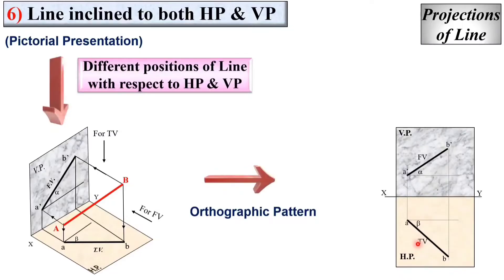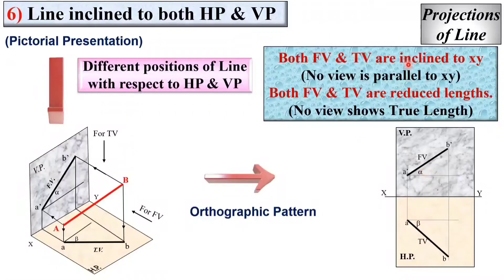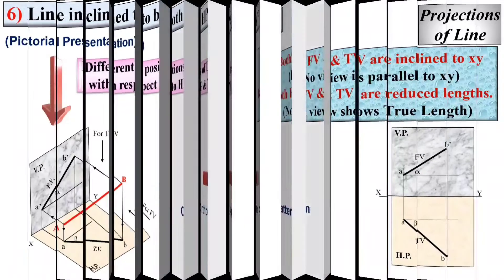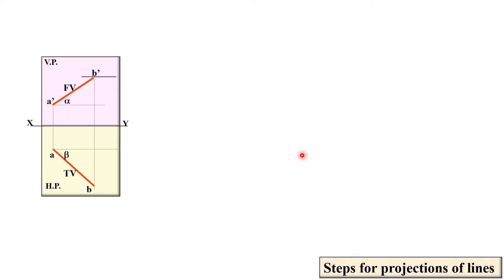Here you can see both the front view and top view are inclined to the XY line, so no view is parallel to XY. Therefore both the front view and top view show reduced length, meaning no view shows the true length. This is very important, so focus carefully and watch the whole video with full concentration so that you can draw any problems from the projection of lines.